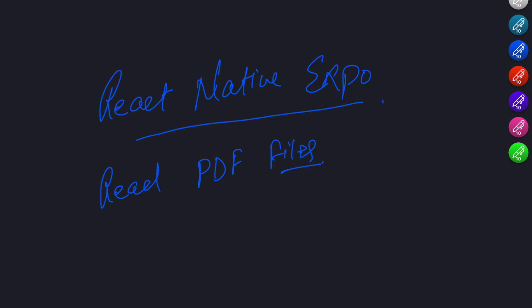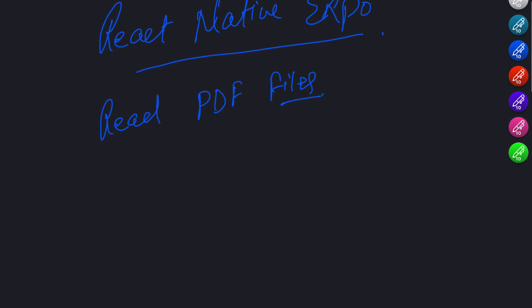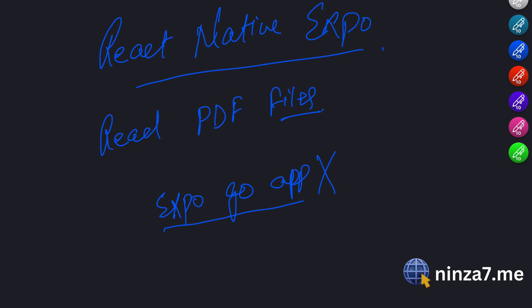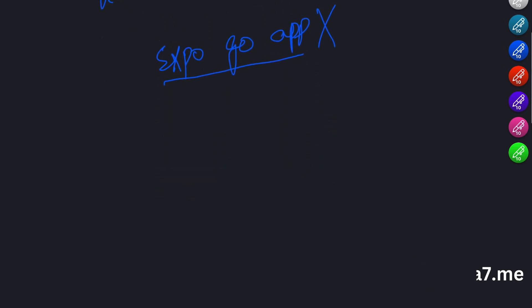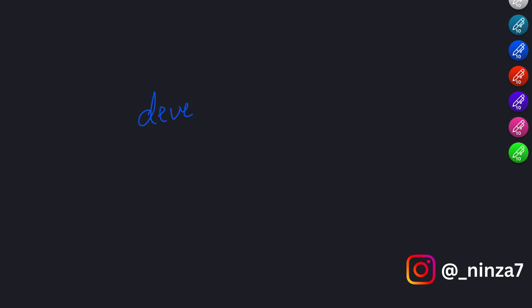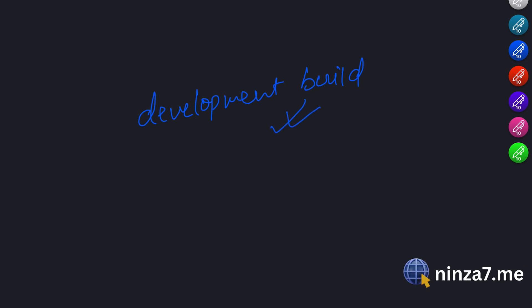Before we dive in, I want to clarify a few things. Please note that this project won't work on the Expo Go app, as I will be using the React Native PDF package which is a native module and cannot be used directly with the Expo Managed Workflow. To use this package, you will need to either eject your Expo project, use the bare workflow, or use the development build to test your application.